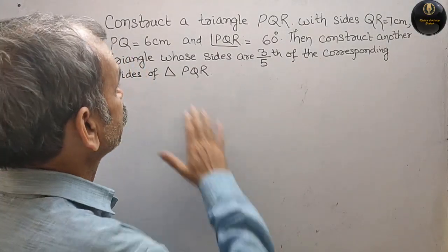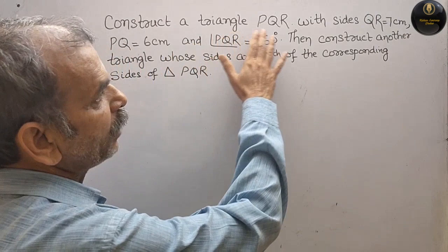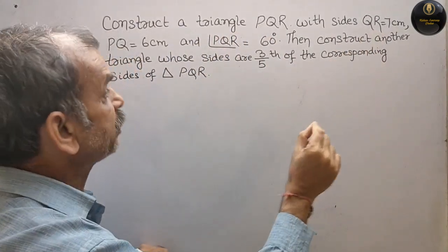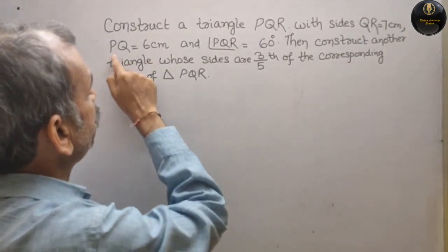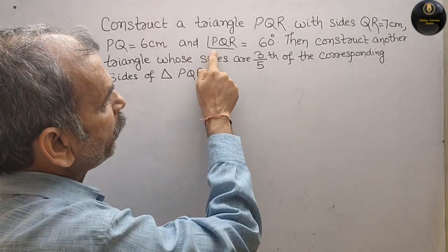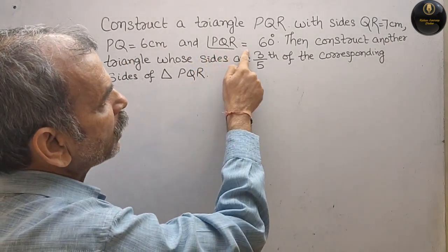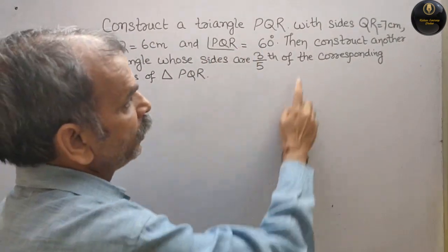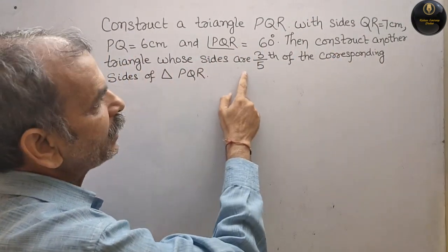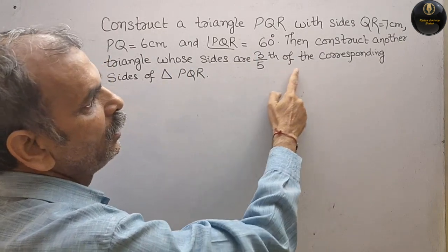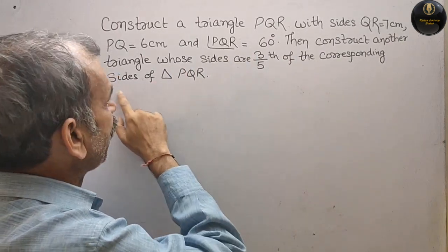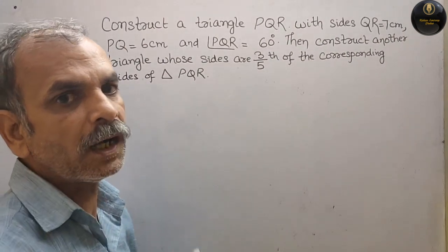Aap ka question hai: construct a triangle PQR with sides QR equal to 7 cm, PQ equal to 6 cm and angle PQR equal to 60 degrees. Then construct another triangle whose sides are 3/5 of the corresponding sides of triangle PQR.